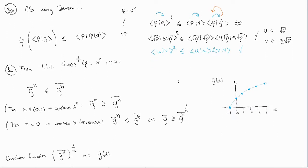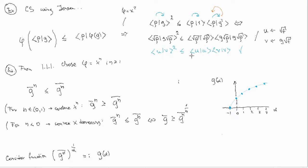Jensen's inequality applied to probability. Interestingly, the first example is that you can basically derive Cauchy-Schwarz inequality from Jensen's inequality, employing the function to be x squared. If you do that and then rename some functions, you will get the inequality — here I've added this one integral, and then you can rename some functions and you get Cauchy-Schwarz.